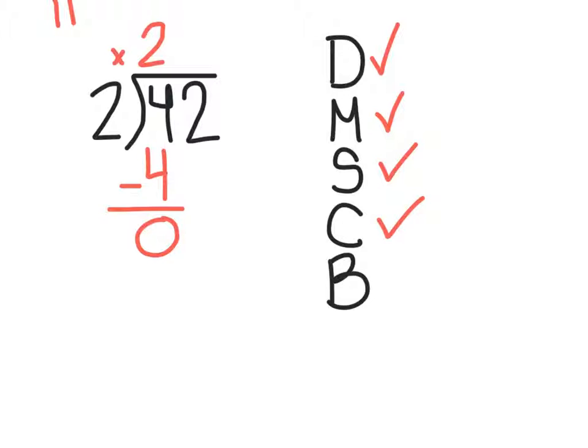And finally, the B stands for bring down. Is there another number in the doghouse that needs to be brought down? I call the dividend the doghouse. And the answer is yes. The 2 can be brought down next to the 0.